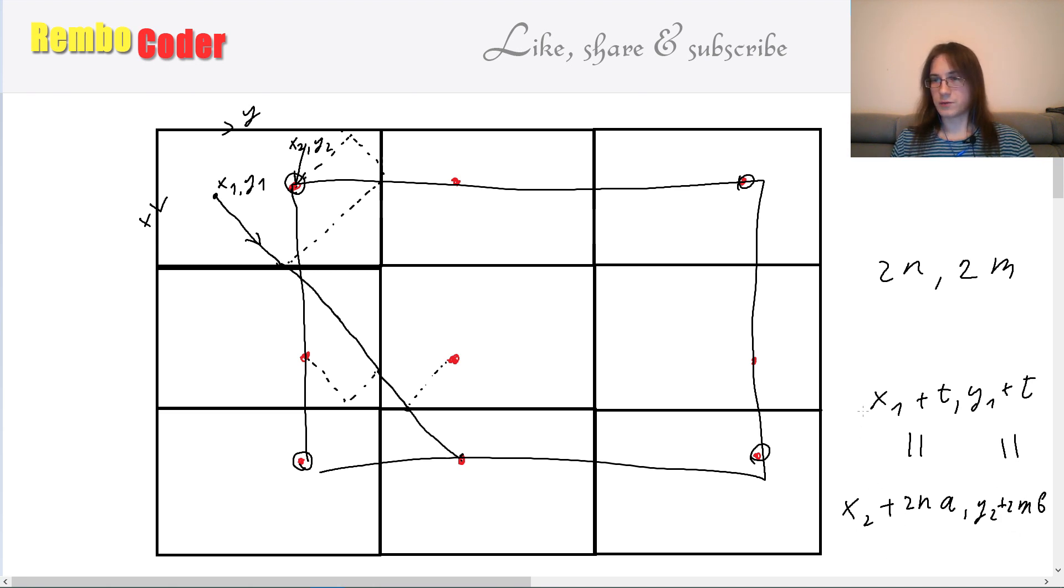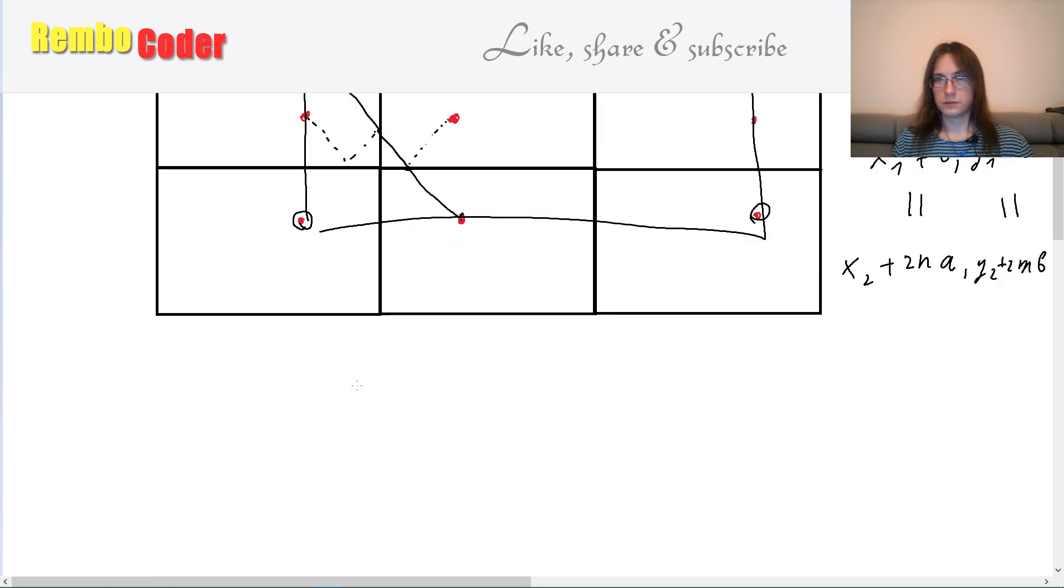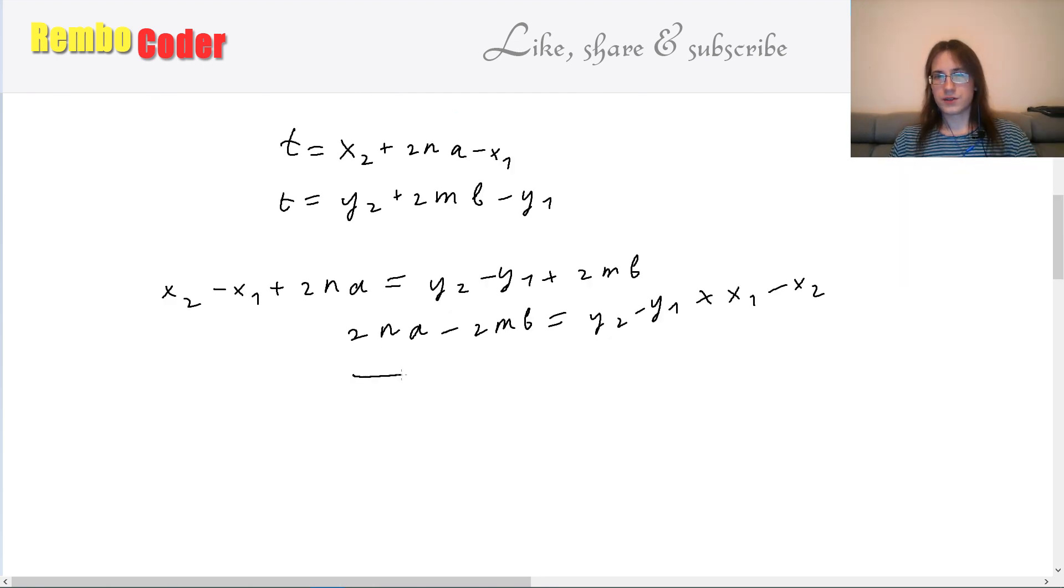So the smallest t which solves such system of equations. Let's rewrite it in terms of t. So let's just write it as an equation on a and b. So this is the equation that we get. And let's rewrite it. So let's denote 2n as an n with a circumflex and 2m as an m with a circumflex. And all this expression let's just denote it as s.